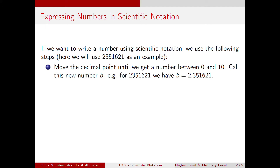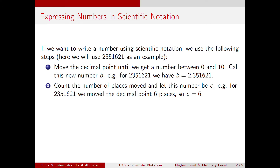So this is our new number B. Now we have to count the number of decimal places that we have moved and let this number be C. In our case we moved from the right hand side just after the last 1, 6 places to the left until we got 2.351621. So C for us is 6.